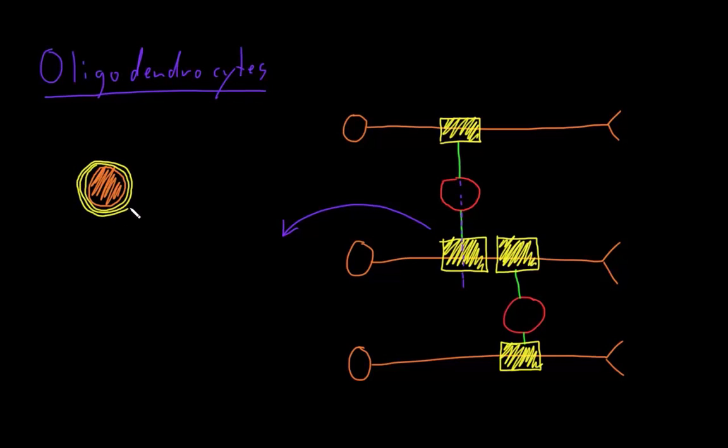And I like to think of these like the rubber coating on a wire, kind of insulating the axon. And we'll get into how information is transmitted along axons in other videos, but basically this makes the transmission of information faster and more efficient.